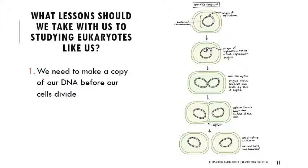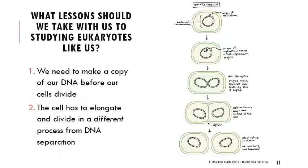When thinking about how this is relevant for us as eukaryotes, our DNA also needs to be copied before our cells can divide, and the cell has to elongate and divide in a process separate from DNA separation. The DNA is separating and the cell itself is also separating — those are fundamentally two separate processes.